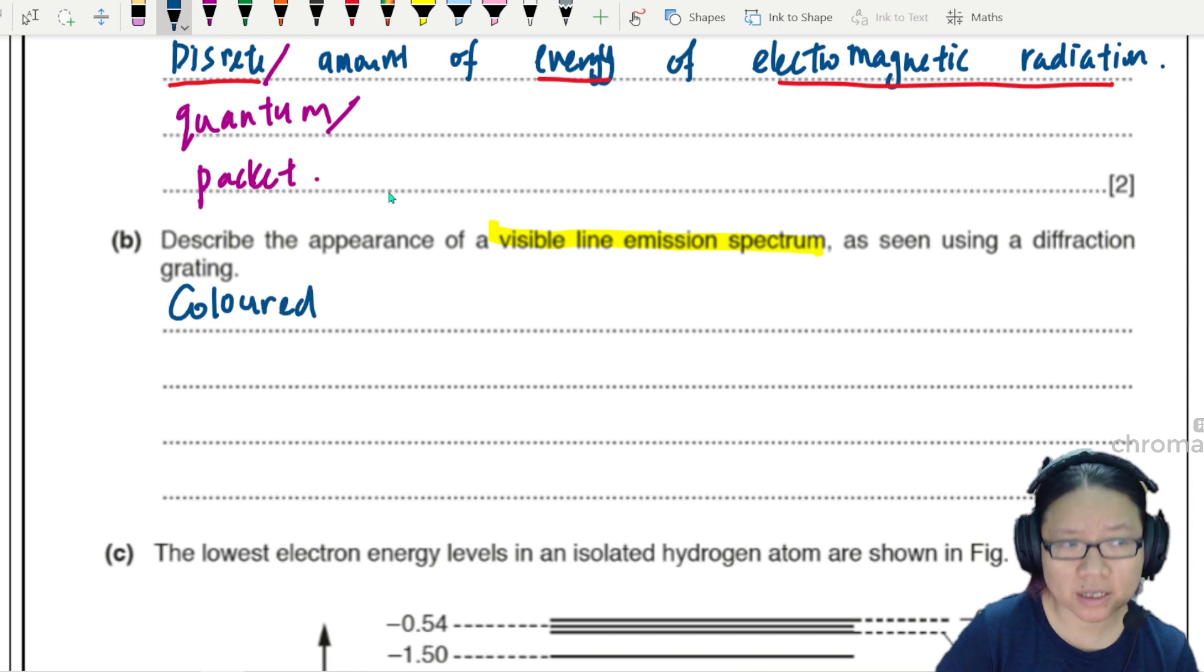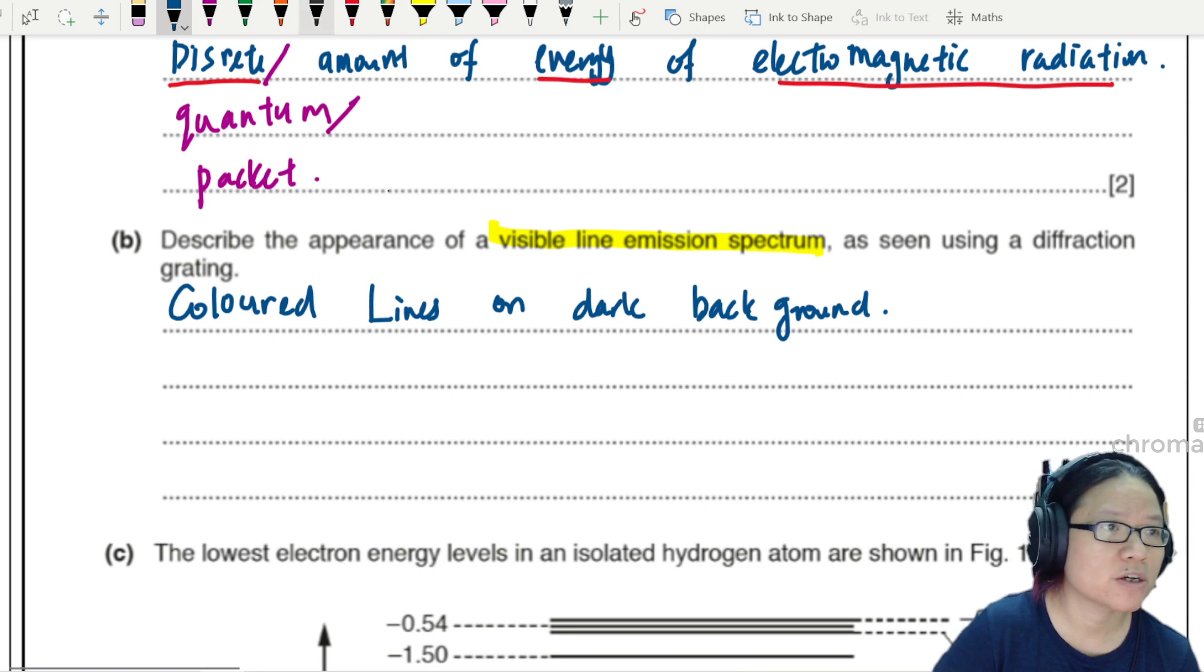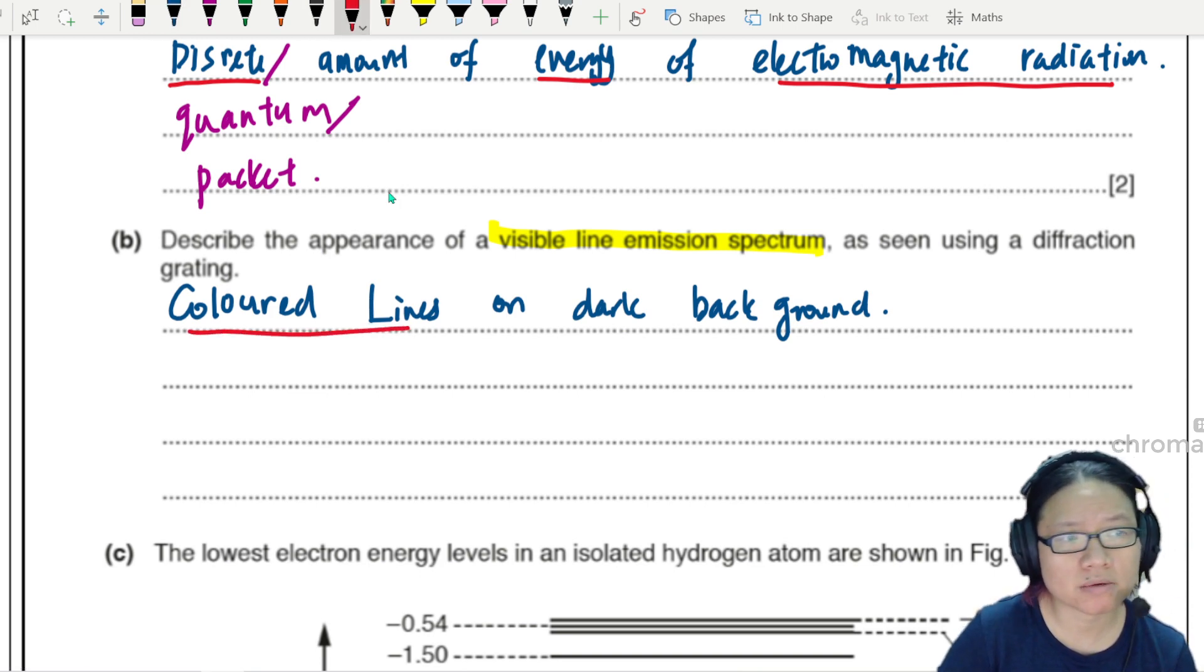We're going to use the UK spelling: colored lines on dark background. That's your two marks. Colored lines is one mark - you must use the word lines - and dark background is the other mark.